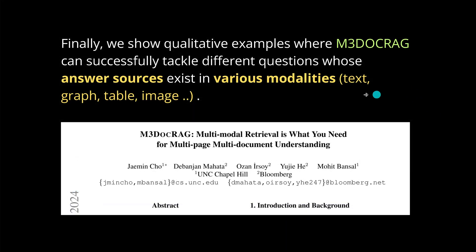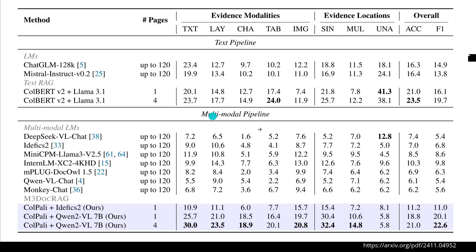The authors show qualitative examples where M3DocRAG successfully tackles questions whose answer sources exist in various modalities — text, graph, table, image. It doesn't matter in what form the information is available; the model takes everything in and understands it by converting all information into a vector space. Looking at the overall accuracy and F1 scores, this is the performance you can expect when you apply this system.